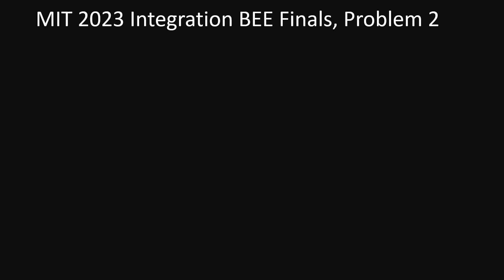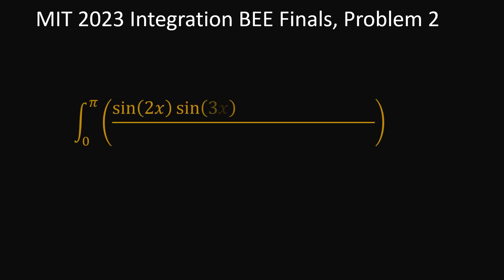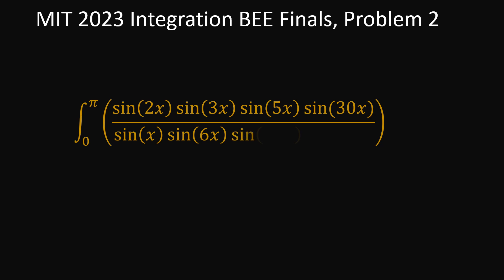This is another very interesting problem from the MIT 2023 Integration Bee finals. This was the second problem — a very interesting problem: the integration of sine 2x, sine 3x, sine 5x, sine 30x over sine x, sine 6x, sine 10x times sine 15x, all squared from 0 to pi. It's a very tricky problem, not as complicated as the first one, but very interesting.